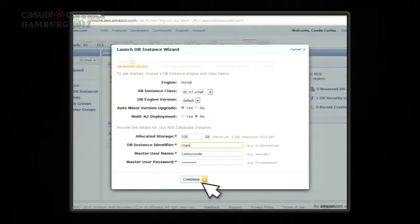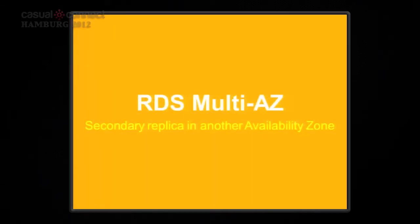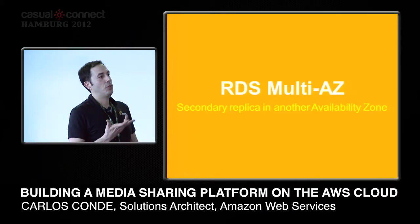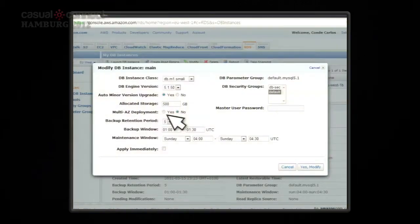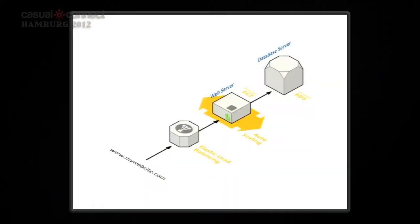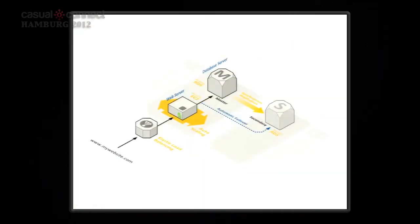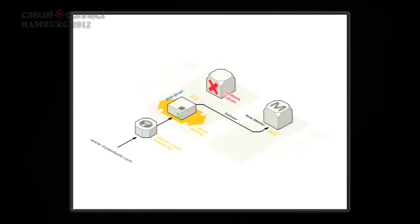You can put your database server on the back end. An important reliability feature is the multi-availability zone database option — by clicking a single checkbox, Amazon creates a synchronous replica of your database in another availability zone, meaning a separate data center. If your main database fails, traffic is redirected to the other database, your data is safe, and your website stays available.